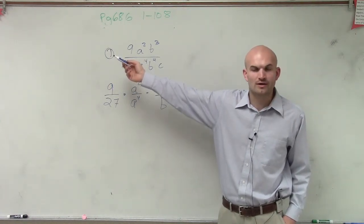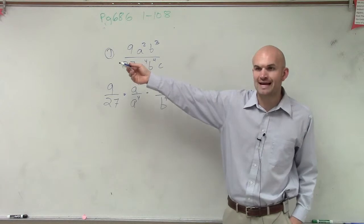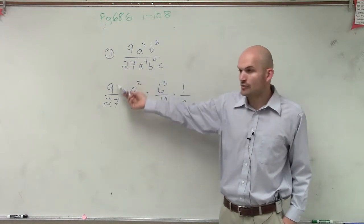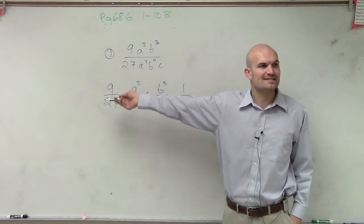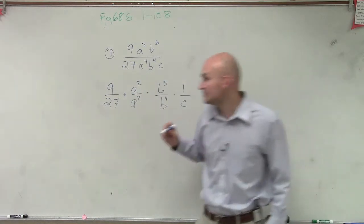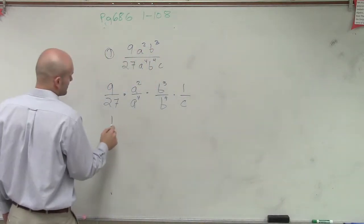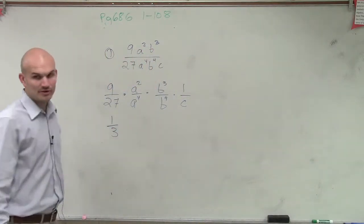Just like you can reduce 2 over 8 as 1 fourth, how can we reduce 9 over 27? What divides evenly into both 9 and 27? 3, so 1 third. That can be reduced down to 1 third.